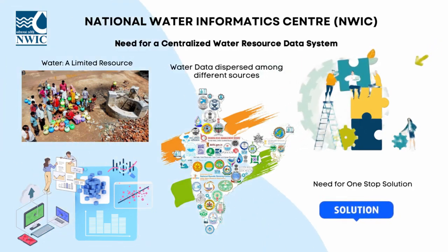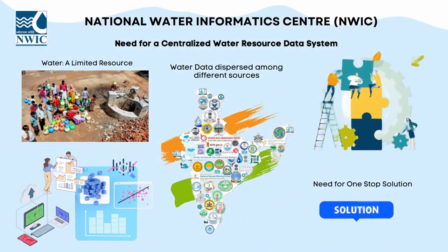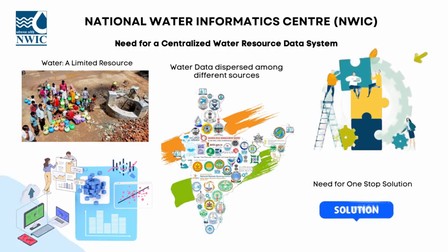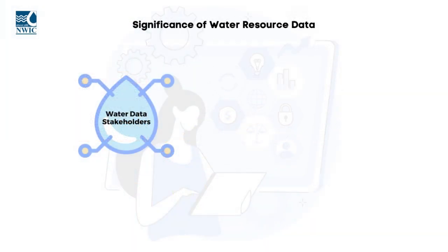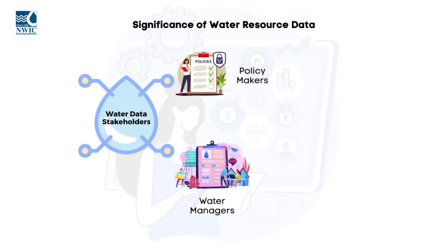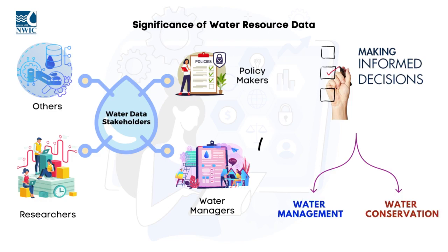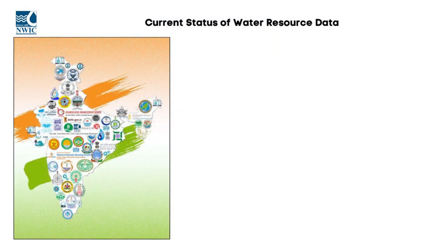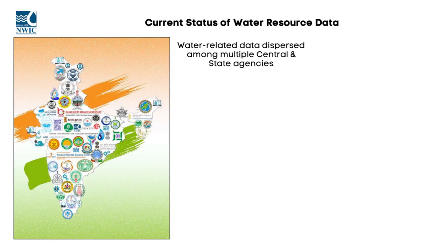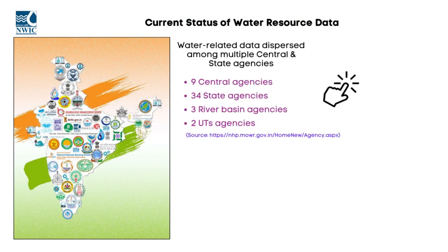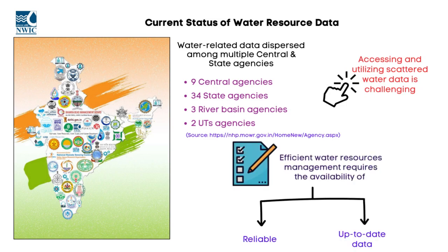The need for a single window solution for all water resources data and information has become increasingly important in recent years. This information is critical for stakeholders, including policymakers, water managers, and researchers, to make informed decisions regarding water management and conservation. Presently, the water resources data and information are scattered across various sources, making it difficult to access and utilize them effectively. The availability of reliable and up-to-date water data is essential for the efficient management of water resources in the country.